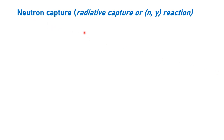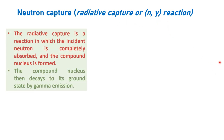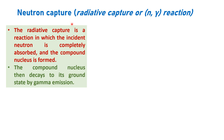Let us first see what is neutron capture. From the word itself, we know it is a radiative capture wherein a neutron is captured and as a result gamma radiations are emitted along with the product that is formed. This reaction is alternatively called as radiative capture or N-gamma reaction. The radiative capture or neutron capture is a reaction in which the incident neutron is completely absorbed and the compound nucleus is formed.